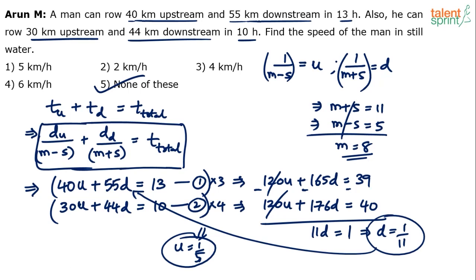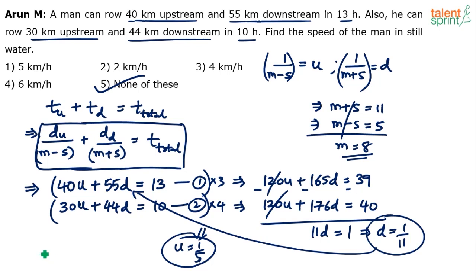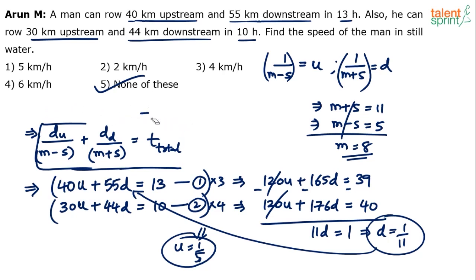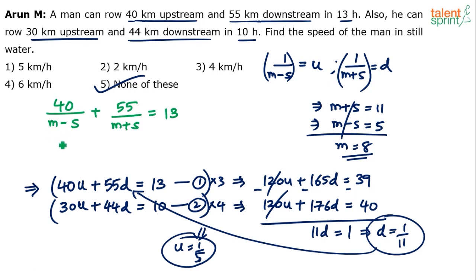There's one more way to solve this question — by going through the options. Let me explain that in a different color. So the two equations in their original form are: 40/(m − s) + 55/(m + s) = 13, and 30/(m − s) + 44/(m + s) = 10.